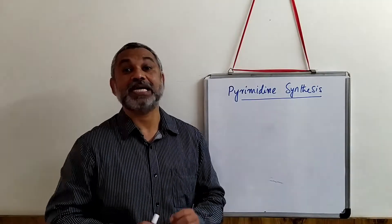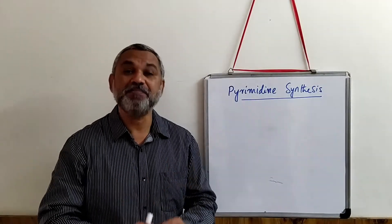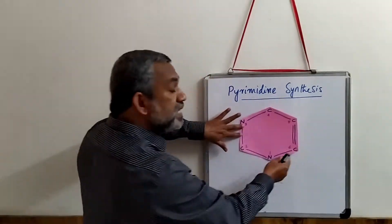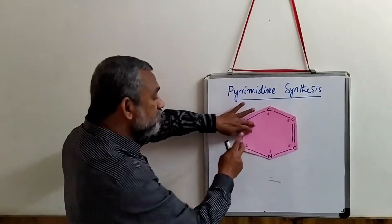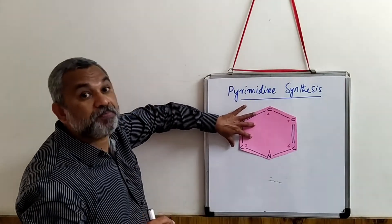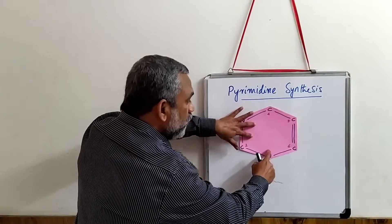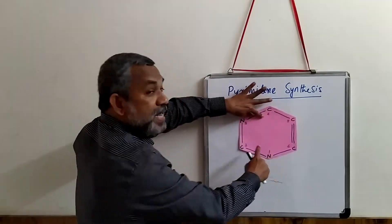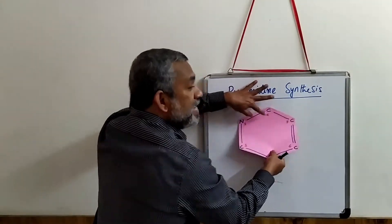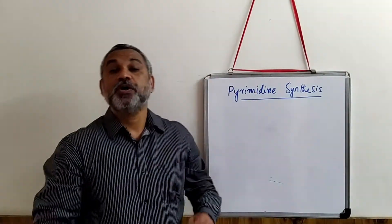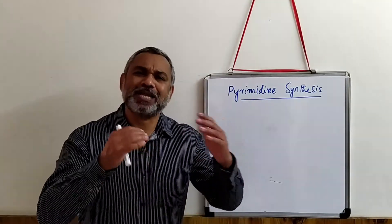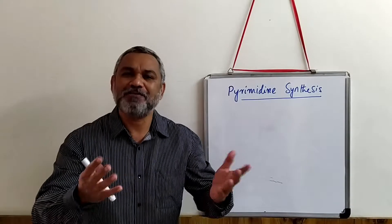In this video we are going to look at the synthesis of pyrimidine nucleotides. The pyrimidine nucleotide has a single ring structure. What is important is the numbering, which is slightly different — it goes in a clockwise direction: one, two, three, four, five, and six. Pyrimidine nucleotides are synthesized in the cytoplasm, and the process is relatively simple — only five steps.